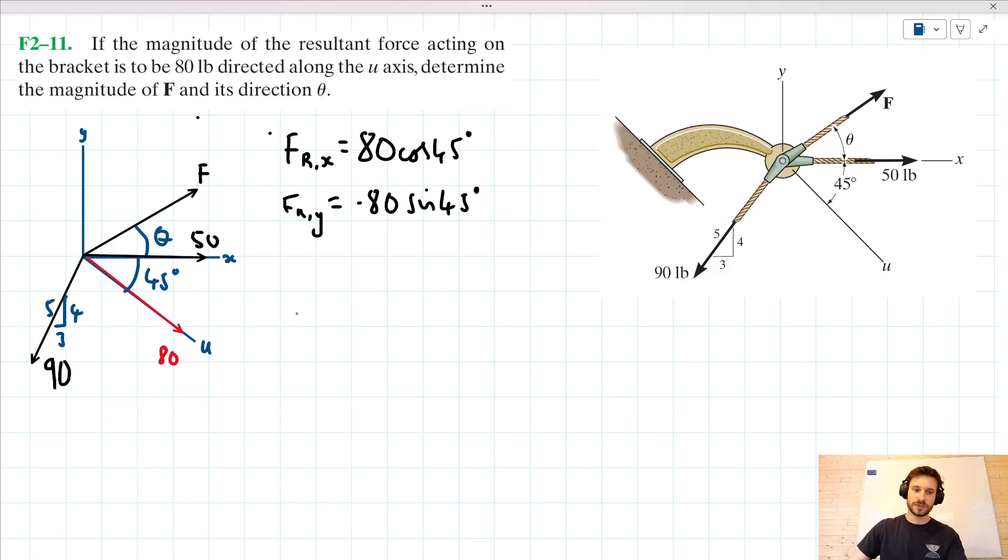So like I say, if we were to add all of the horizontal components of F, this 50-pound force and this 90-pound force together, we would get 80 cos 45. So we can show this. Let's take all of the horizontal components that we have here. So we'd have F cos of theta plus 50 minus 3 fifths of 90. And we can say that that's all equal to 80 cos 45.